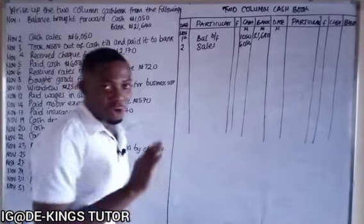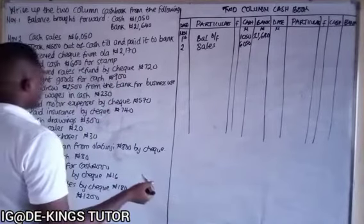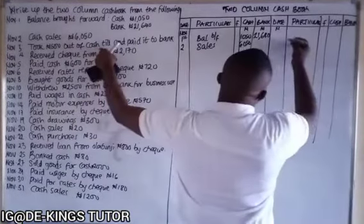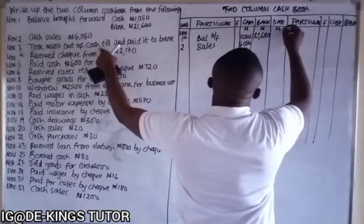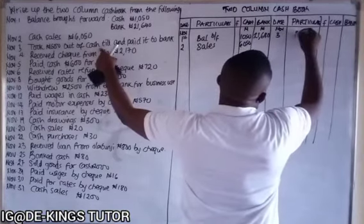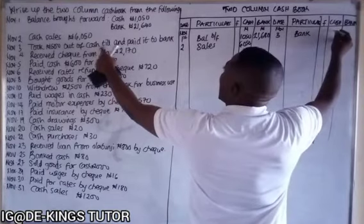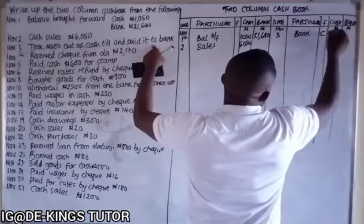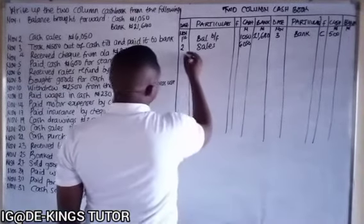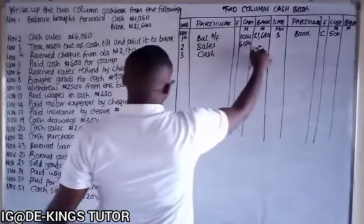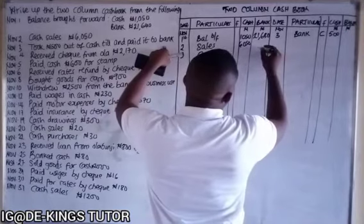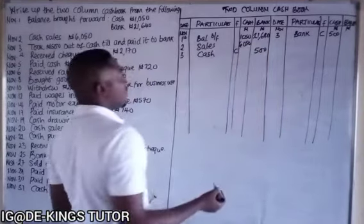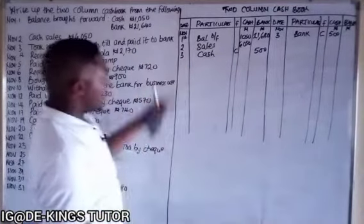November 3 — took 500 out of the cash till and paid into the bank. This is a contra entry. Cash is giving out, so under particulars we write 'bank' with 500 in the cash column. Then on the credit side, bank is receiving it, so we write 'cash' with 500 in the bank column. Mark folio as 'C' to indicate contra entry.